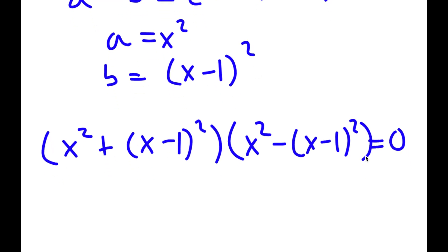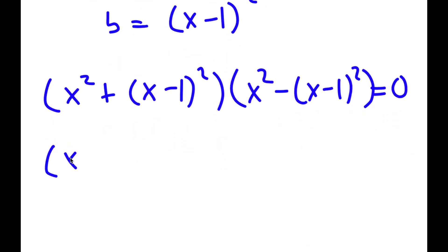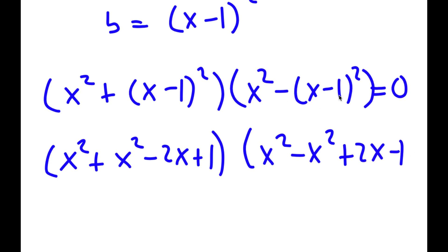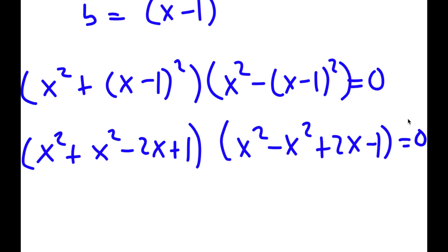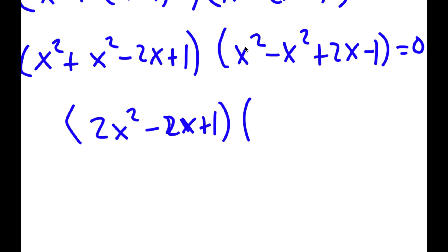Now, x minus 1 squared expands to x squared minus 2x plus 1. So I have x squared plus x squared minus 2x plus 1, times x squared minus x squared plus 2x minus 1, remembering to distribute the negative sign. This equals 0. Simplifying: x squared plus x squared is 2x squared, so I have 2x squared minus 2x plus 1, times the x squared terms cancel leaving 2x minus 1, is equal to 0.